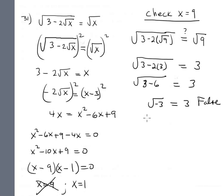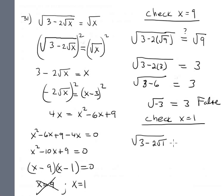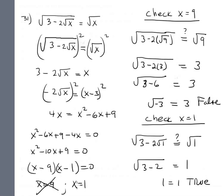Checking x equals 1: 3 minus 2 times the square root of 1, which is 3 minus 2 equals 1, and the square root of 1 is 1. So 1 equals 1 — true. The only valid solution is x equals 1. The solution set for this equation is {1}.